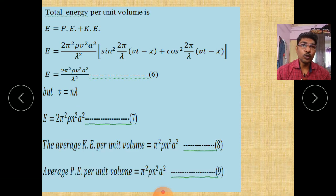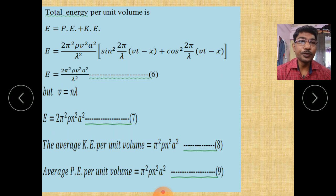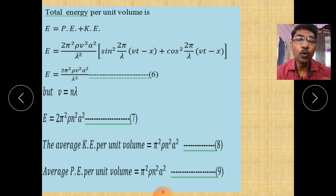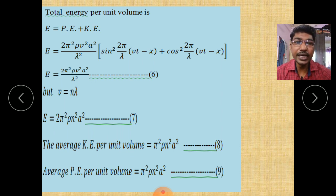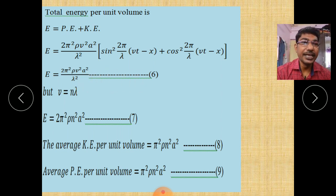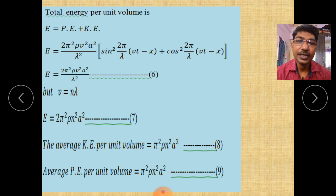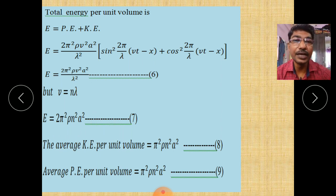Now, total energy is calculated as potential energy plus kinetic energy. Substituting the values and taking common terms outside, we have sin² and cos² terms with the same angle. Therefore, using sin²θ + cos²θ = 1, the total energy E = 2π²ρv²a²/λ². This can also be written using v = nλ as E = 2π²ρn²a², where n is the frequency, λ is the wavelength, and v is the velocity.